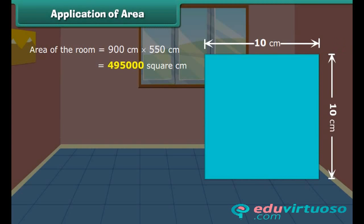Let us find the area of the tile now. Area of the tile is equal to 10 multiplied by 10. It is equal to 100 cm².